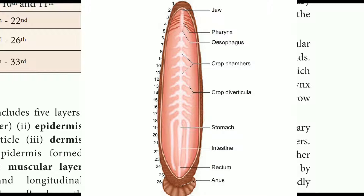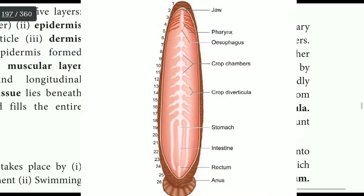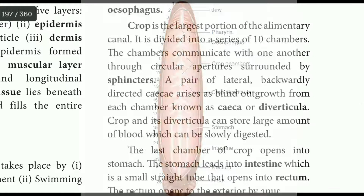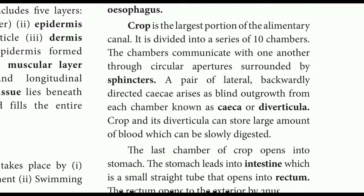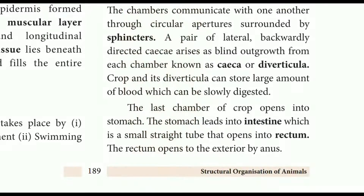The crop is the largest part of the digestive system. It has 10 chambers connected by circular apertures. The crop stores a large amount of blood and partially digests it. The last 10th chamber connects to the stomach, then to the intestine, rectum, and anus. The system handles feeding and digestion.